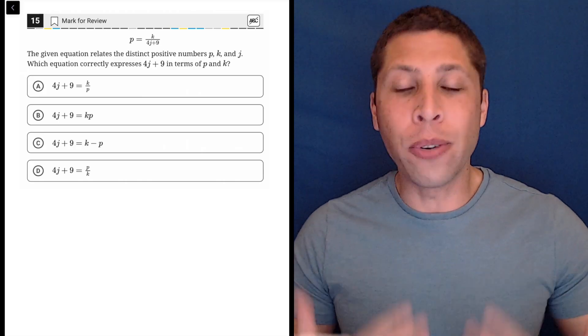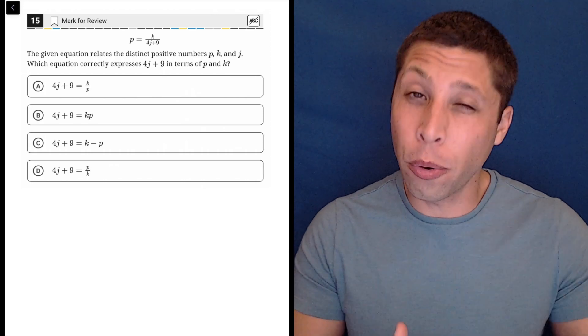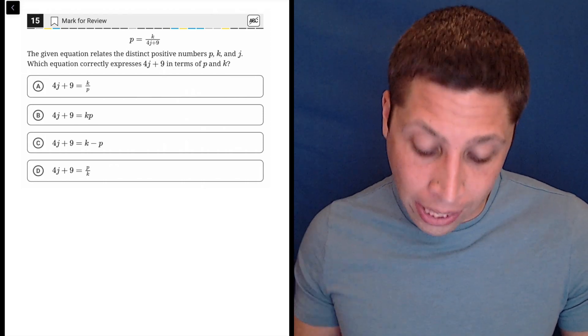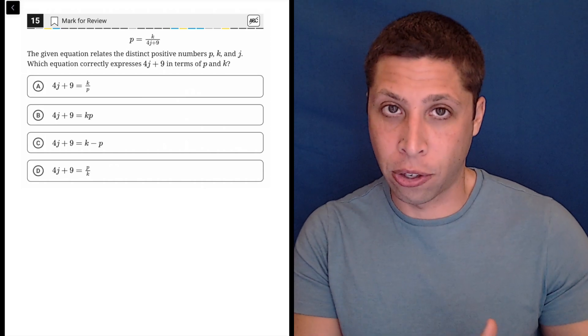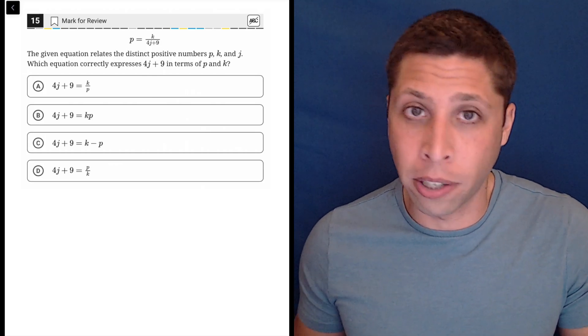Okay, you are very likely to get a question like this on the test where there's obviously some algebra involved, there's more than the normal two variables, and we're being asked to rearrange this thing so that we have 4j plus 9 kind of off on its own. So these are all skills you need, and I do think that the algebraic solution here is the easiest.